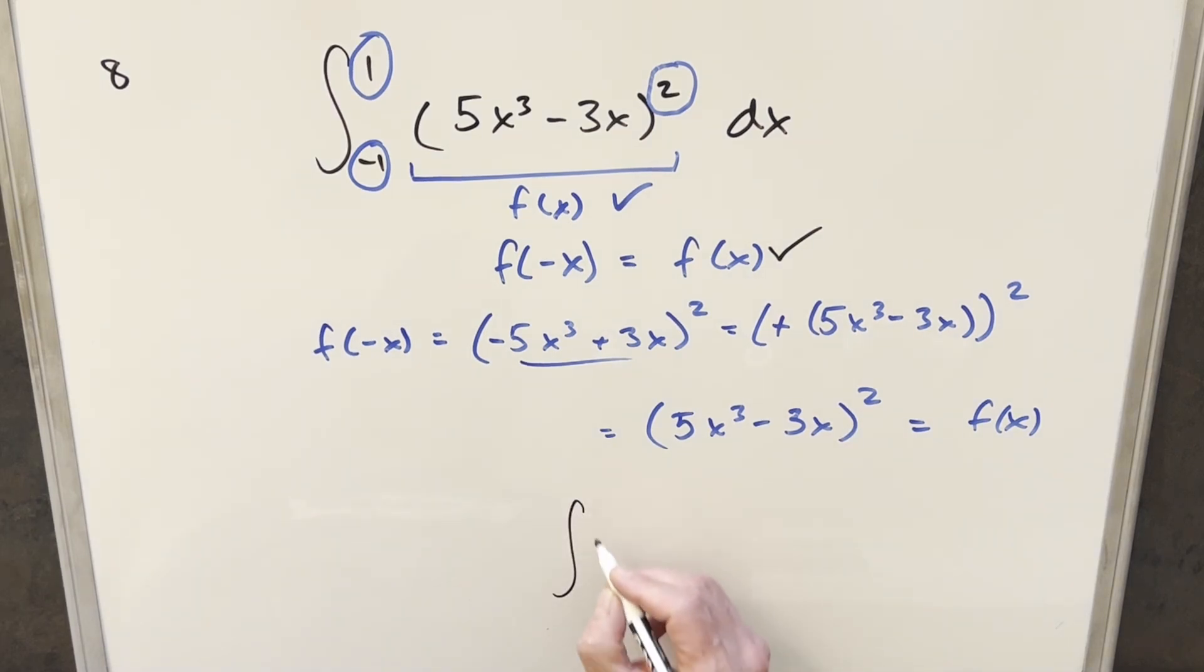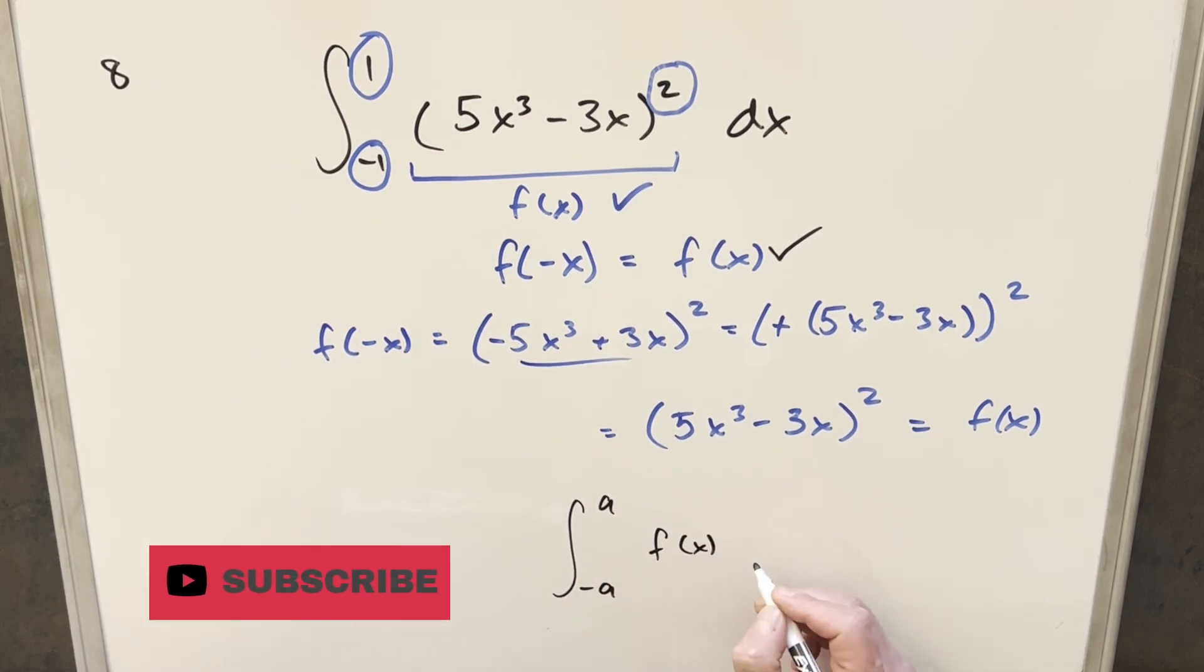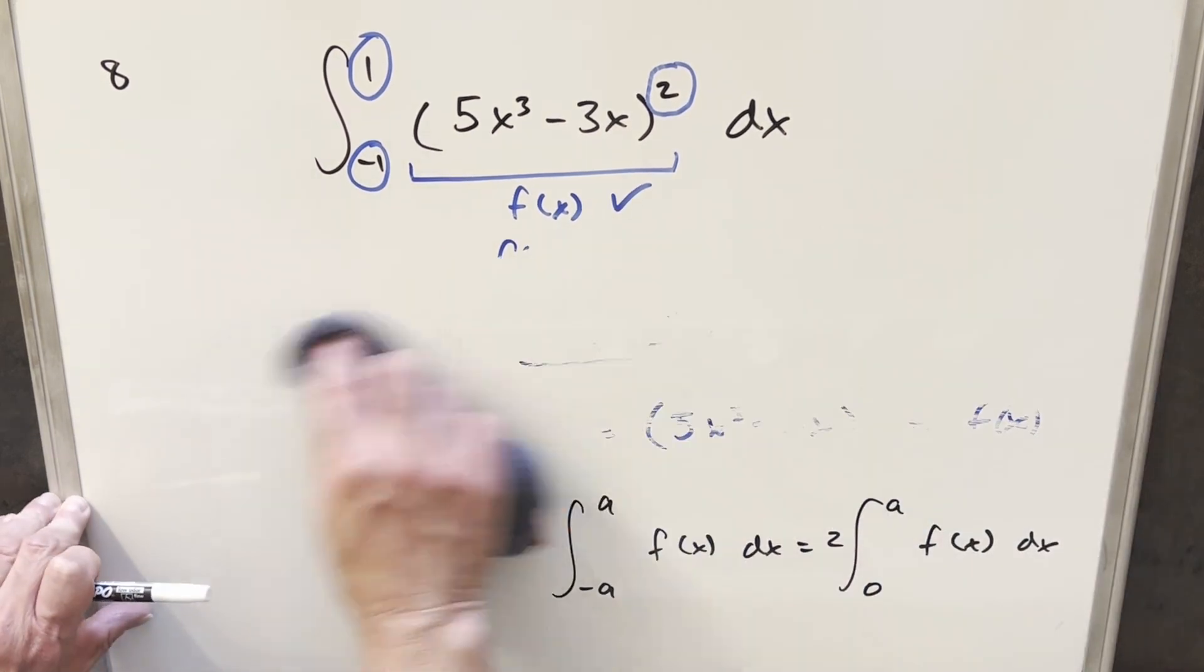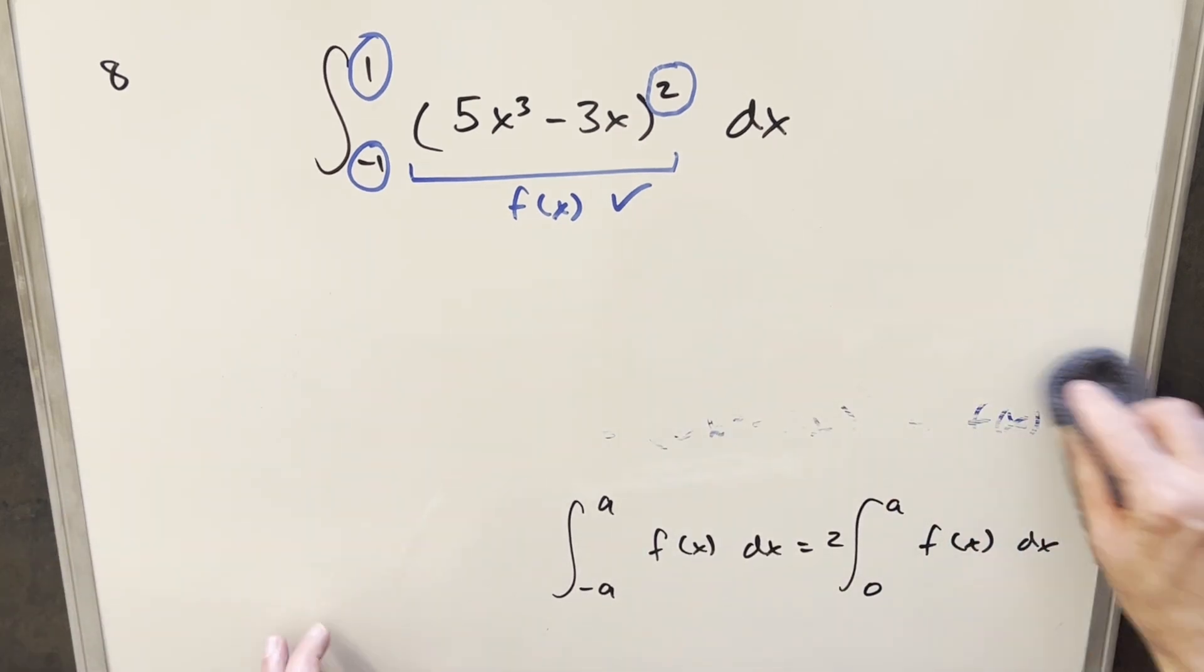Now what we have for that is when we have an integral with symmetric bounds like we have here, we're going from minus a to a, and we have our f of x is even. Then what that allows us to do is we can rewrite the integral, bring a 2 out front, change the lower bound to 0, so we'll be going from 0 to a of f of x dx. So we can just clean this up and rewrite our integral using this trick right here.